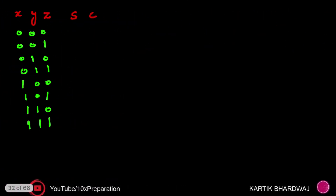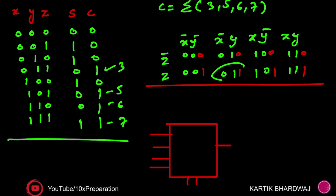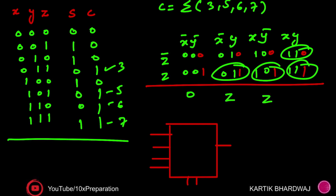For the Carry output, the minterms are three, five, six, and seven. Applying the reduction technique with variables X and Y as select lines, we get the following 4x1 MUX inputs: zero, Z, Z, and one (since Z plus Z-bar equals one). So the carry is implemented as a 4x1 MUX with select lines X and Y and data inputs: 0, Z, Z, 1.